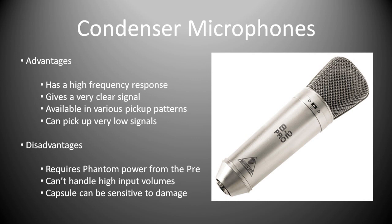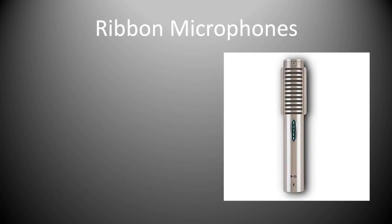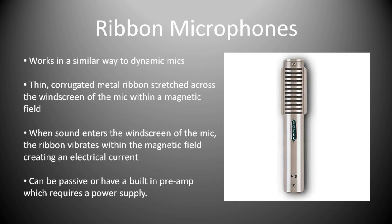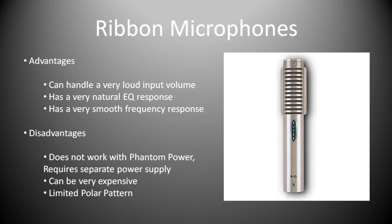Overall, condensers are a far clearer microphone than dynamics. The last type is ribbon microphones. These work in a similar way to dynamic microphones — they use a thin corrugated metal ribbon stretched across the windscreen of the mic within a magnetic field. When sound enters through the windscreen, the ribbon vibrates within the magnetic field, creating an electrical current. You get a couple of different types: passive ribbons, or ribbons with a built-in preamp which requires a power supply.